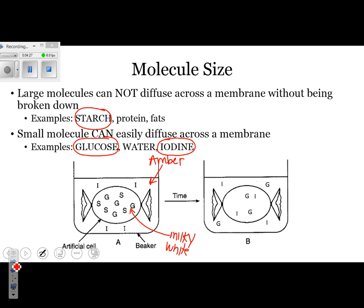Last one we have is starch. Starch is a large molecule. A large molecule cannot pass through the cell membrane. Therefore, starch is only located inside the artificial cell.